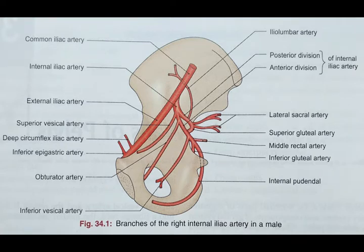There are 10 branches of the internal iliac artery. The first three — iliolumbar artery, lateral sacral artery, and superior gluteal artery — are from the posterior division.